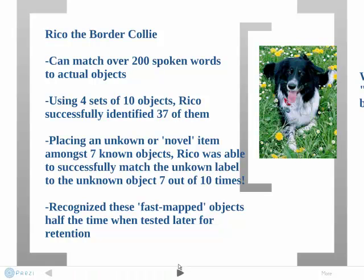In the study, it was found that Rico can match nouns to 200 different objects — toys she would retrieve from different rooms. Using four sets of 10 objects, the dog identified 37 out of 40 total objects. By placing an unknown item among seven known objects, Rico successfully matched an unknown label to the unknown object 7 out of 10 times, meaning she fast mapped a new label more than half the time.